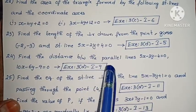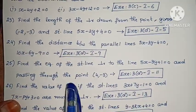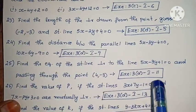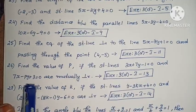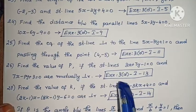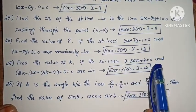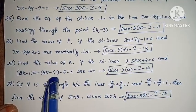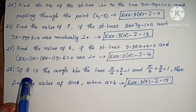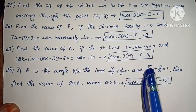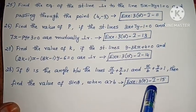This problem has also been repeated in many question papers, so it is important. Next, find the equation of the straight line perpendicular to the line 5x minus 3y plus 1 equals to 0 and passing through the point (4, -3). Next, find the value of p if the straight lines 3x plus 7y minus 1 equals to 0 and 7x minus py plus 3 equals to 0 are mutually perpendicular. Next, find the value of k if the straight lines y minus 3kx minus 4 equals to 0 and (2k-1)x minus (8k-1)y minus 6 equals to 0 are perpendicular. Next, if theta is the angle between the lines x/a plus y/b equals to 1 and x/b plus y/a equals to 1, find the value of sine theta when a is greater than b. We have 28 problems as 2 marks problems.